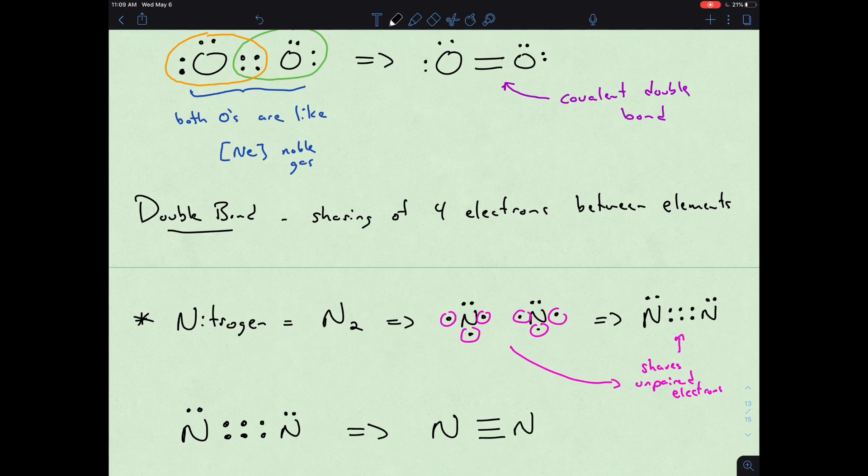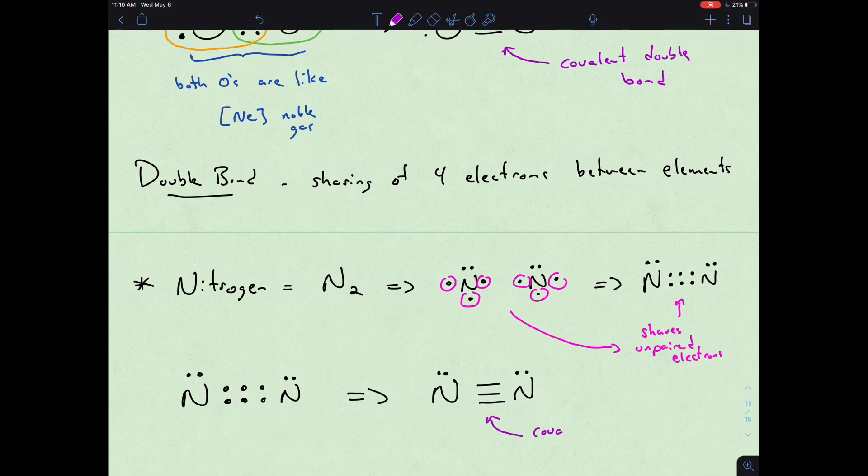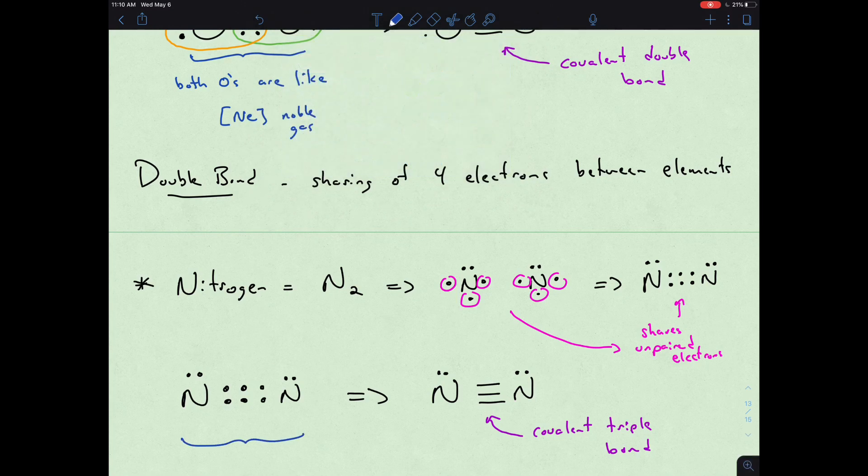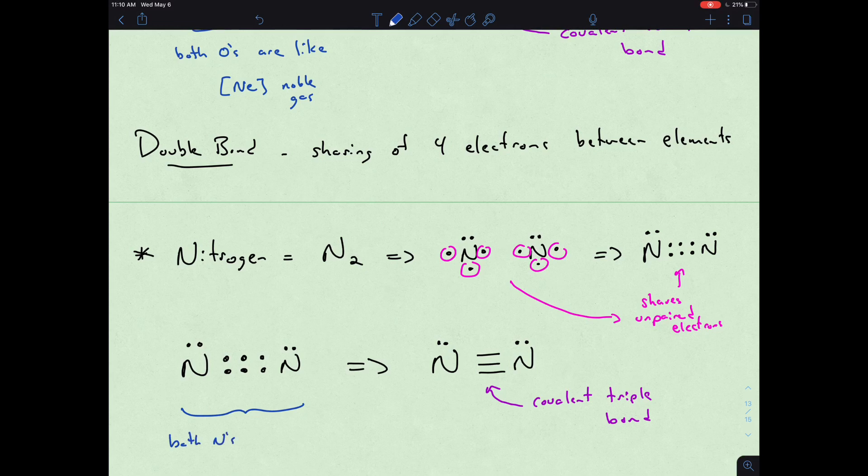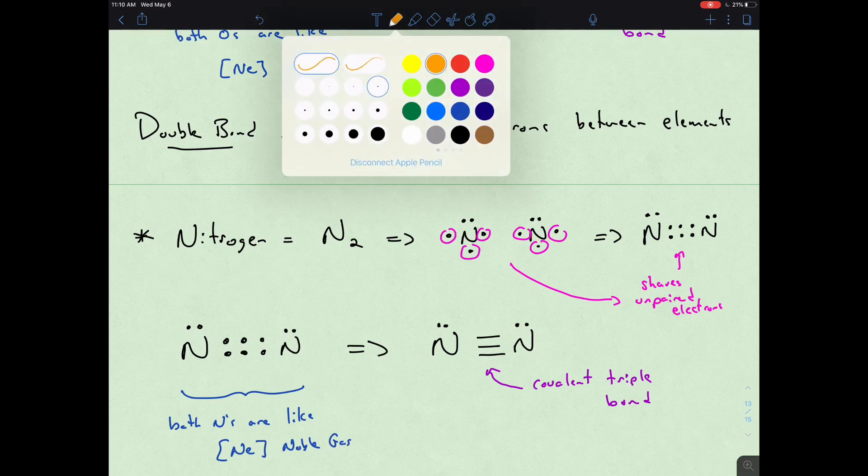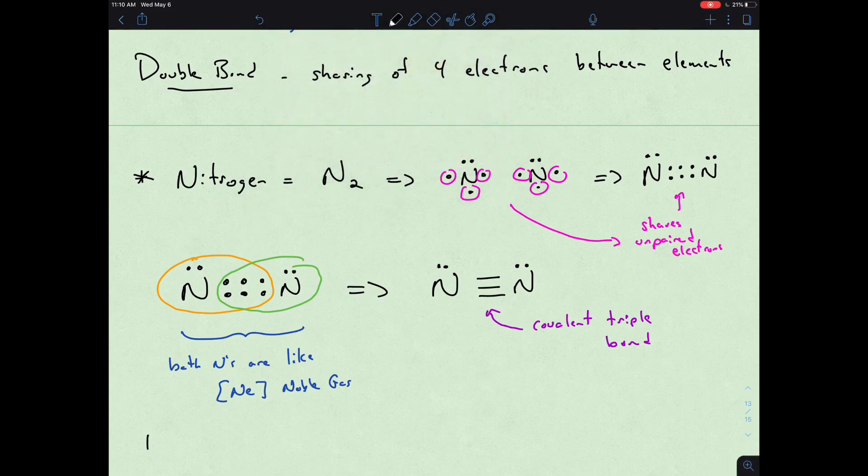Now we actually have the final layer of bonding in terms of covalent bonding which is the triple bond. If we look at both of these nitrogens, they're just like neon as well, our noble gas, where they both have access basically to eight electrons around them. That's the final layer with the triple bond.